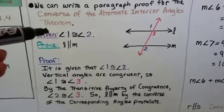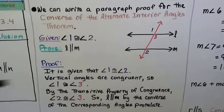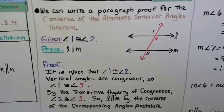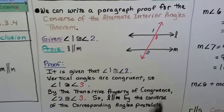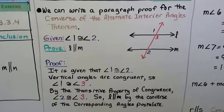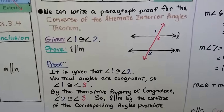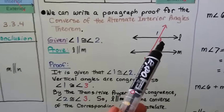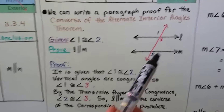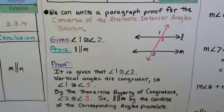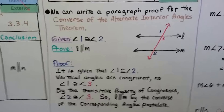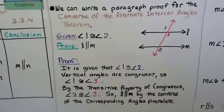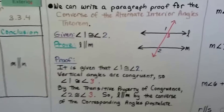Here's our paragraph proof. It's given that angle 1 is congruent to angle 2. Vertical angles are congruent, so angles 1 and 3 are congruent. By the transitive property of congruence, angle 2 is congruent to angle 3. So l is parallel to m by the converse of the corresponding angles postulate. It helps to write these down because if you ever come across this problem, you'll have it all spelled out.